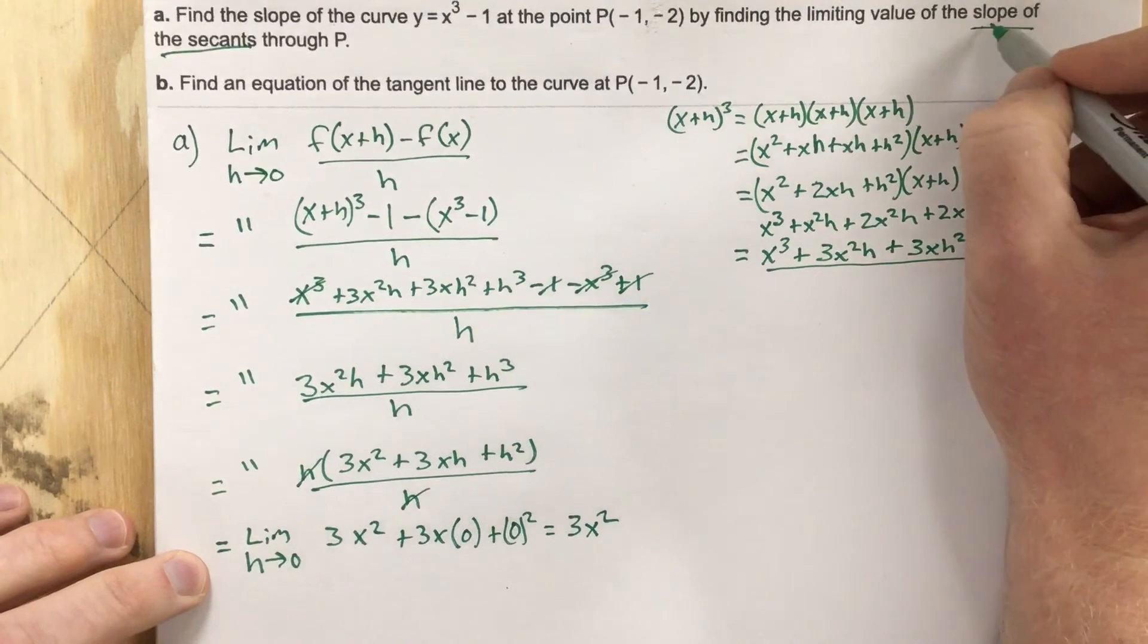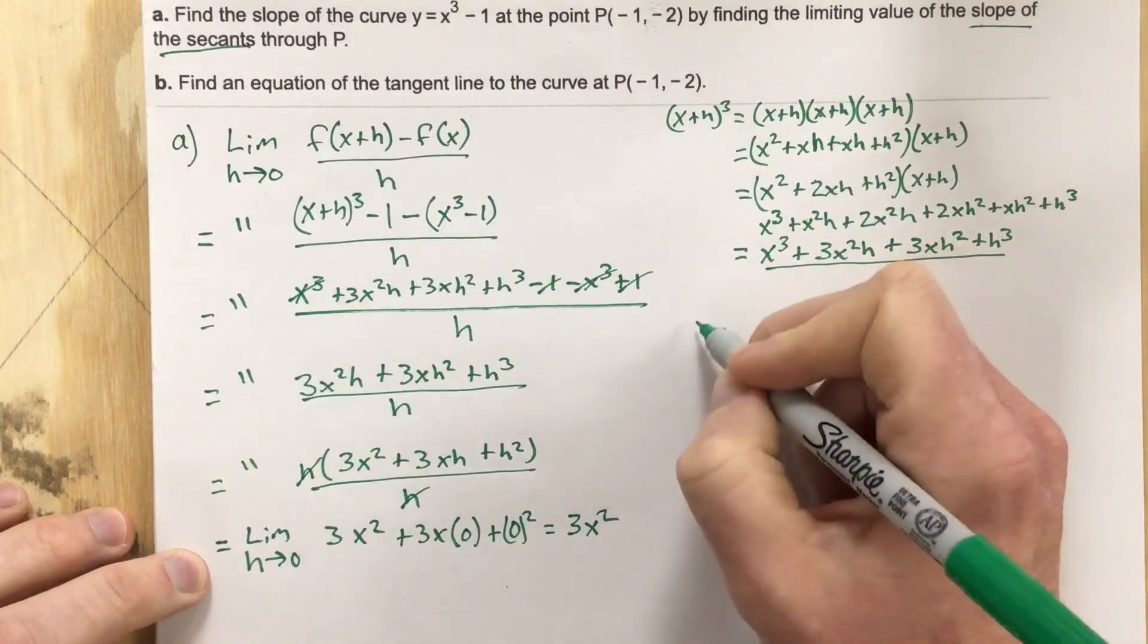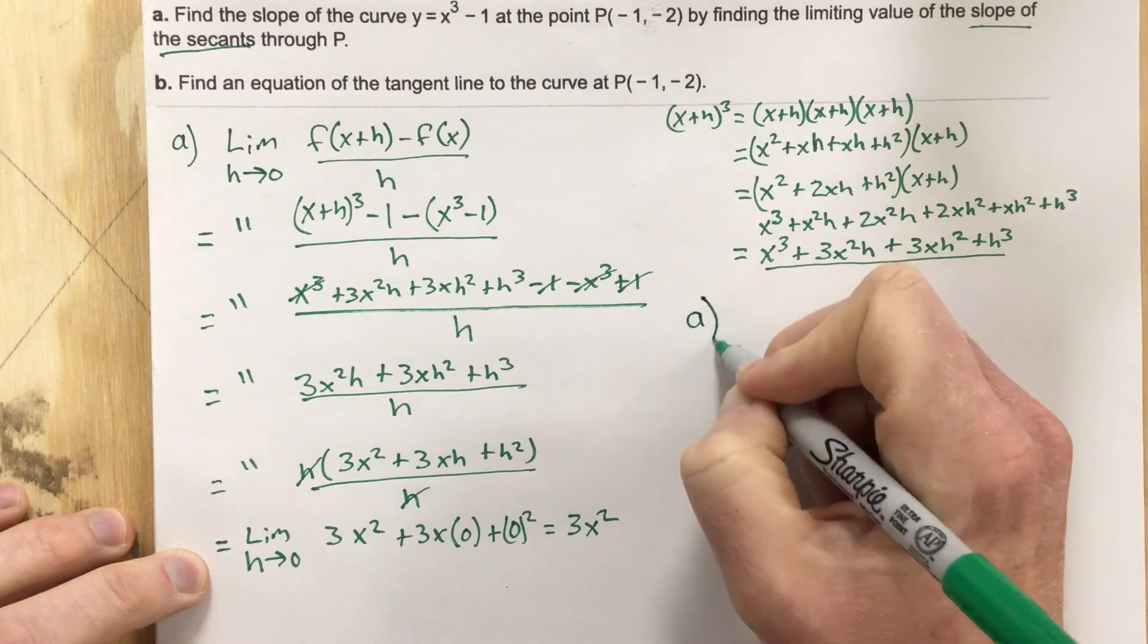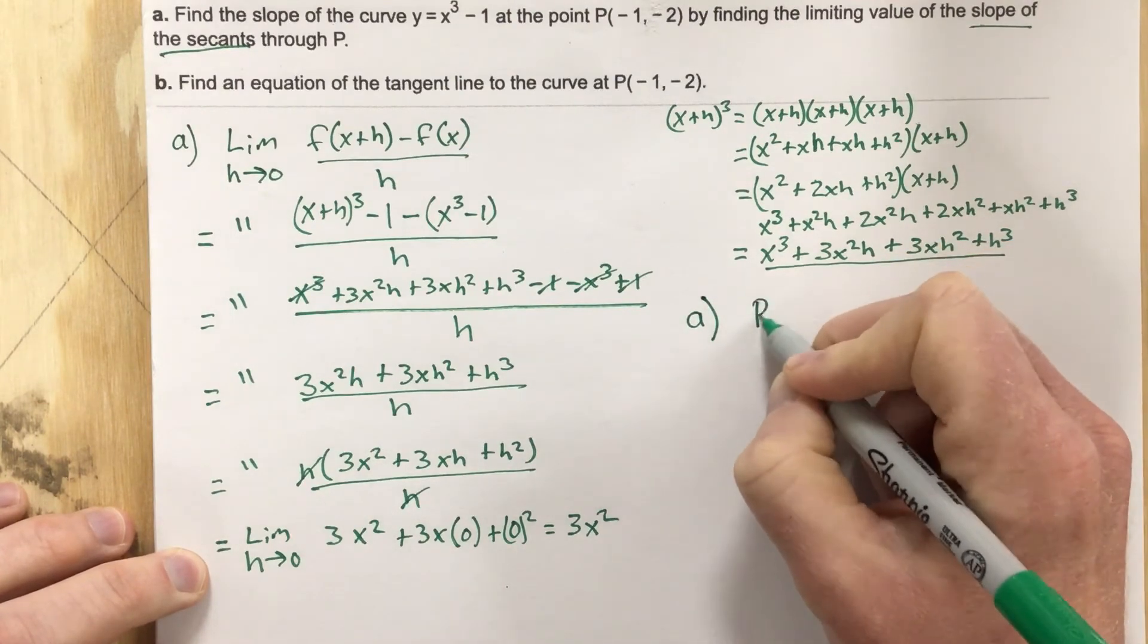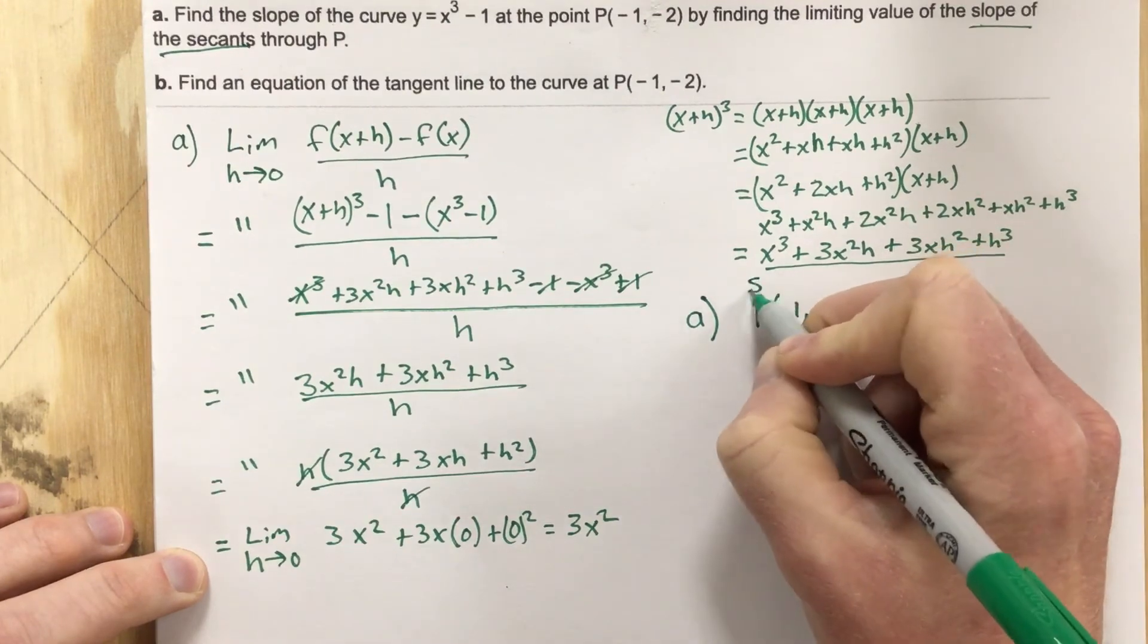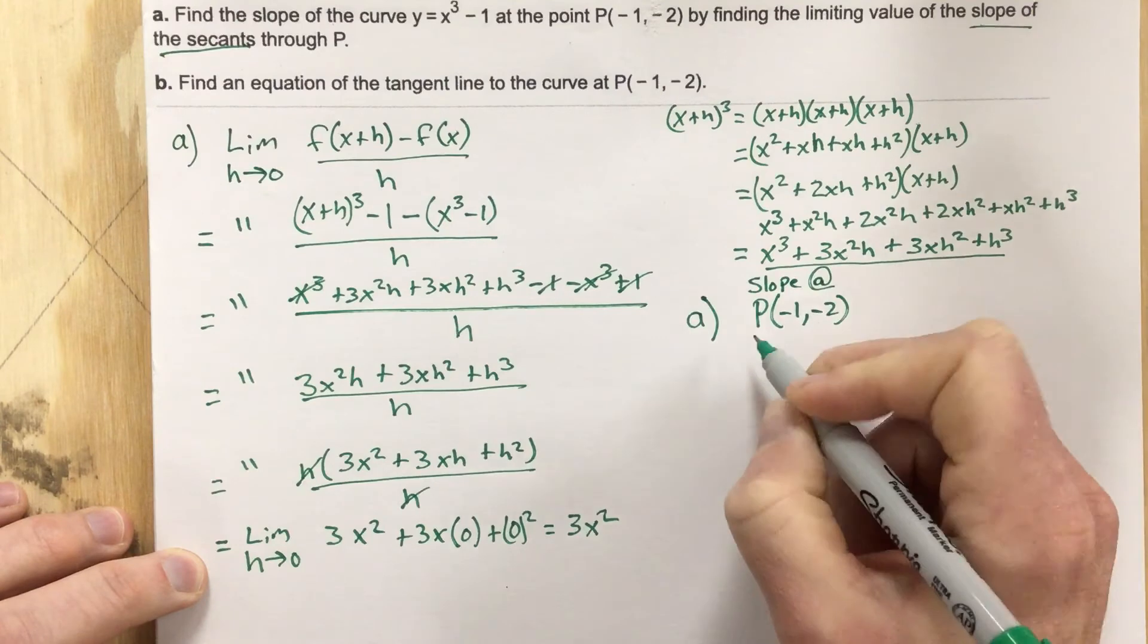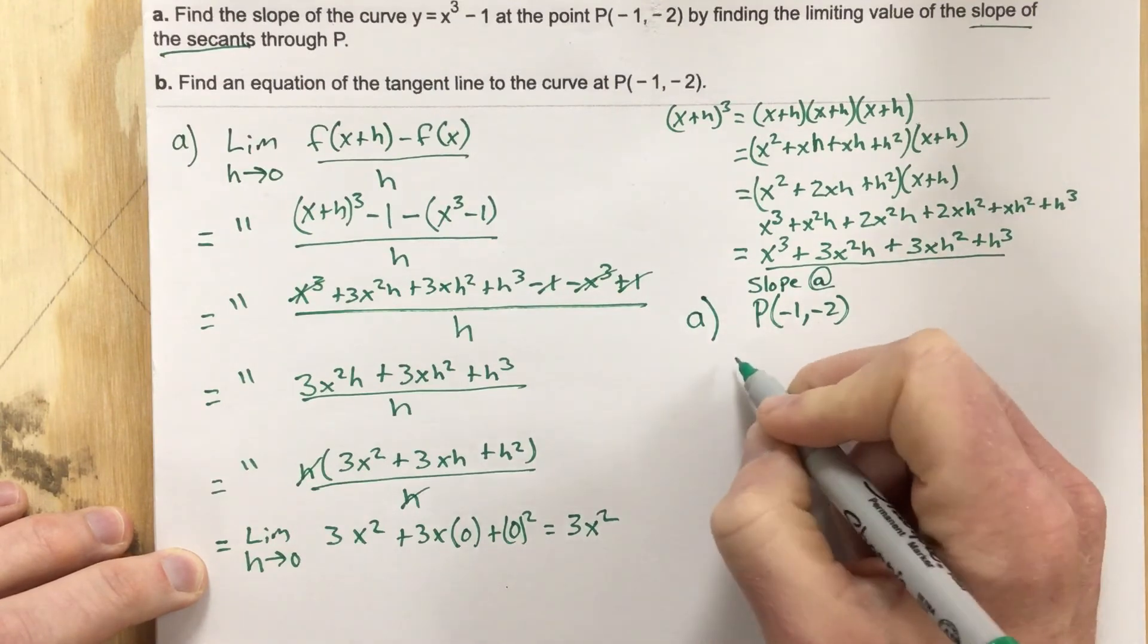Now for part A, they want us to find the slope of the secant, so that means we've got to keep going here. I'm going to say we're finding the slope at point negative 1, negative 2. So slope at this point. Take negative 1, plug it in.